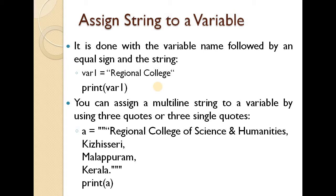We can assign a multi-line string to a variable by using three quotes or three single quotes. For example: A is equal to 'Original College of Science and Humanities, Kishiri, Malapuram, Kerala'.